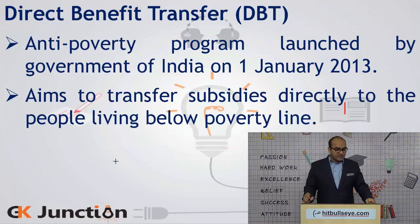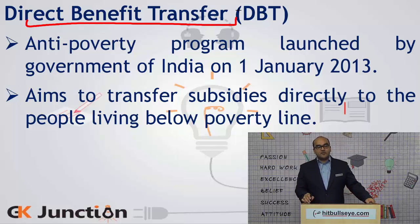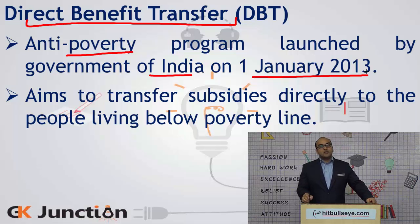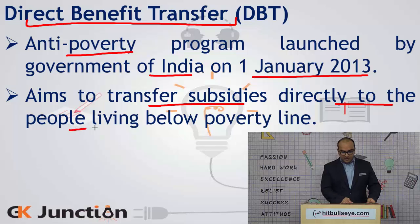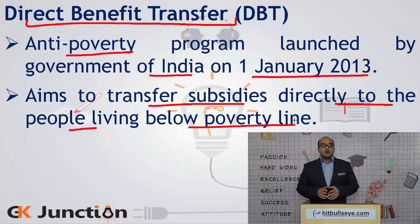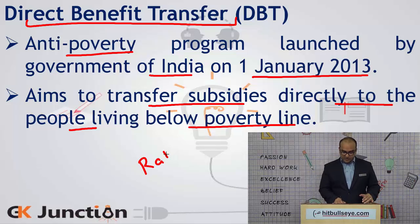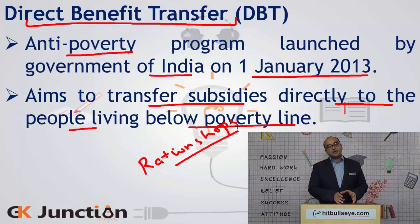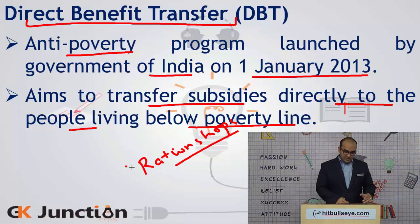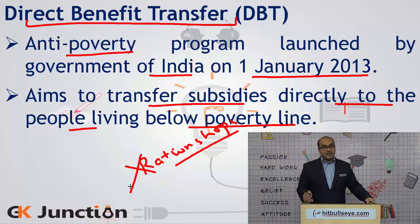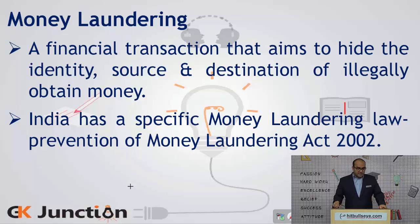Next is the Direct Benefit Transfer Scheme, or Direct Cash Transfer Scheme of the Government of India. This is an anti-poverty program launched by the Government of India on 1st January 2013. It aims to transfer subsidies directly to the people living below the poverty line. Under this scheme, the subsidies are not transferred to sellers — earlier, subsidies were transferred to fair price shops or ration shops. Now, we remove the need for such shops and transfer the subsidy directly to the bank accounts of individuals so that they can buy food, etc., from any shop of their choice.